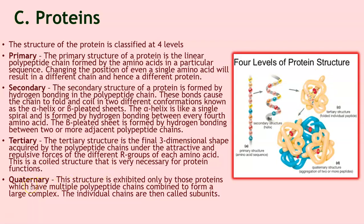Then you have the quaternary structure, which is exhibited only by those proteins that have multiple polypeptide chains combined to form a large complex. The individual chains are then called subunits. You can see the different protein subunits that have come together to form this quaternary structure.